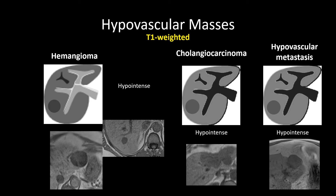On T1-weighted imaging, similar to what was discussed in the hypervascular masses screencast, real nodules and masses tend to be T1 hypointense. Hemangioma, cholangiocarcinoma, and adenocarcinoma metastasis — real masses in the liver tend to be hypointense to the background liver.